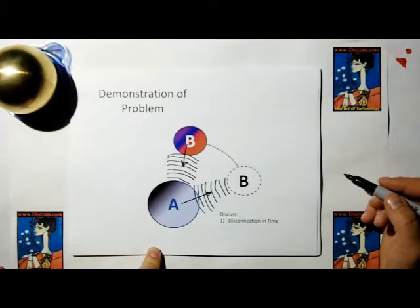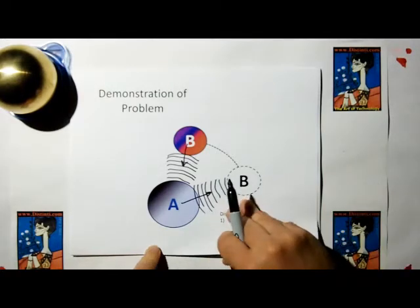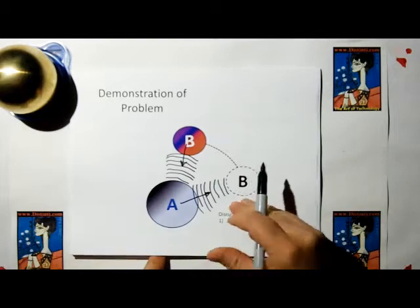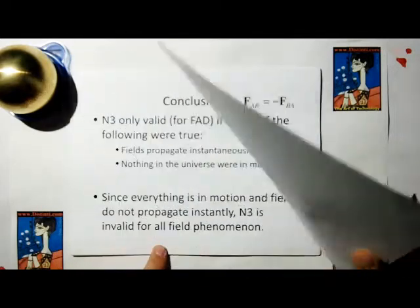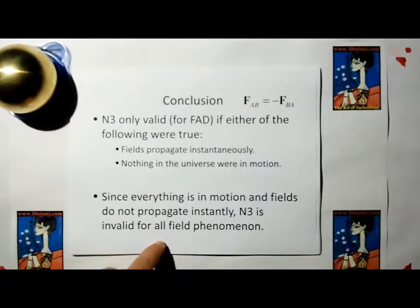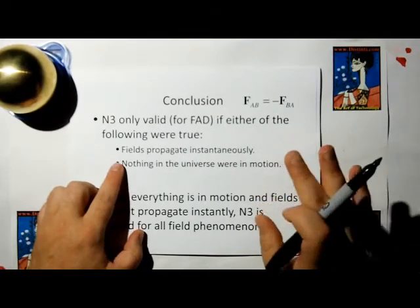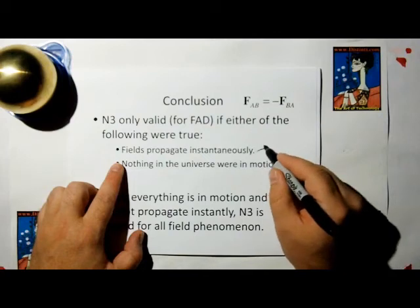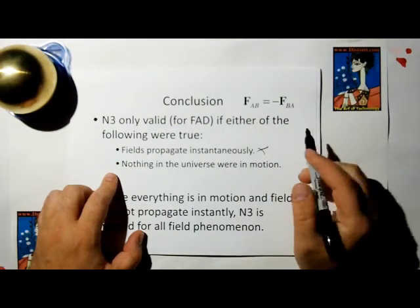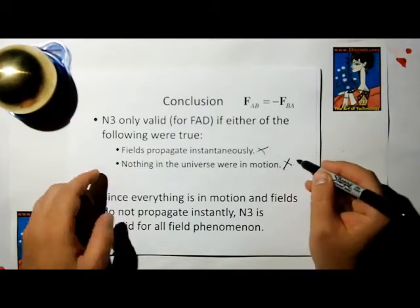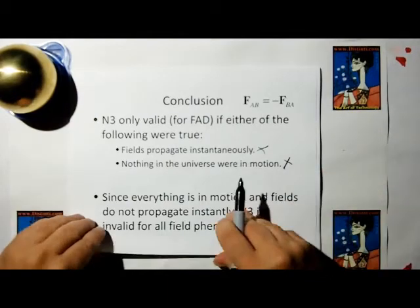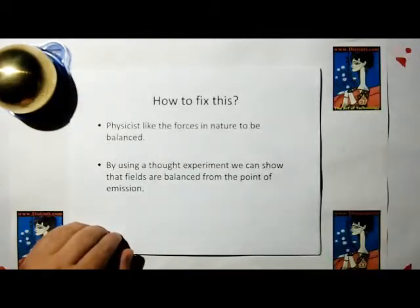They're disconnected in time. And because of this, field phenomenon will never, ever, ever be in, will never satisfy Newton's third law. So all field phenomenon are in violation of Newton's third law. The only way they wouldn't violate a field is if fields propagate instantaneously, which is wrong, or if nothing in the universe are in motion, this is also wrong. So all field phenomenon violate this law. So how do we fix this?